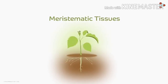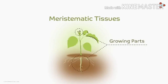Now where are these tissues present, students? They are present in the growing parts of plants — wherever the plant shows growth. Do you know what type of cells meristematic tissues have? They are living and very active cells, with a very high power of division.